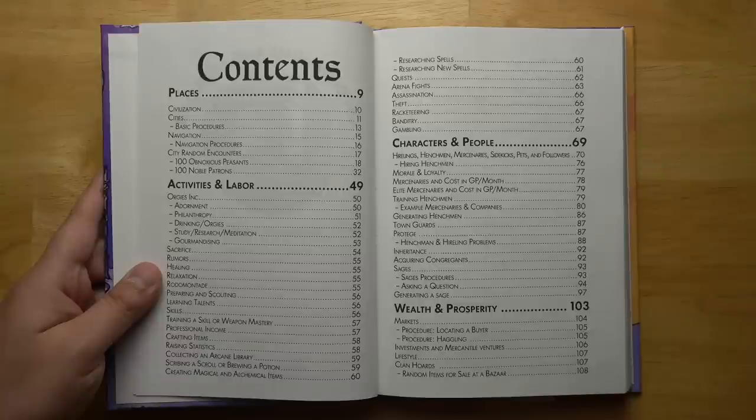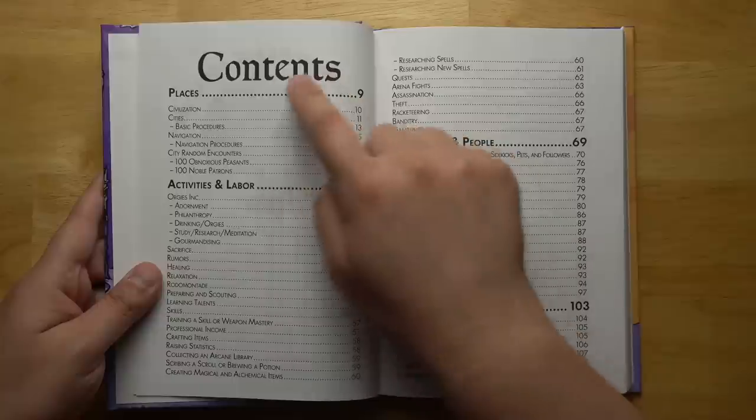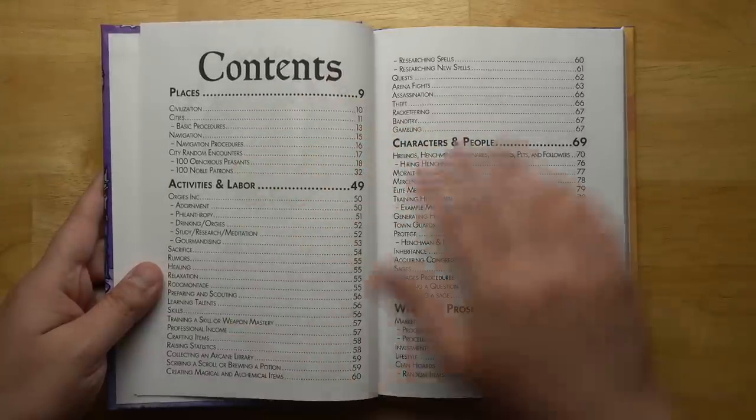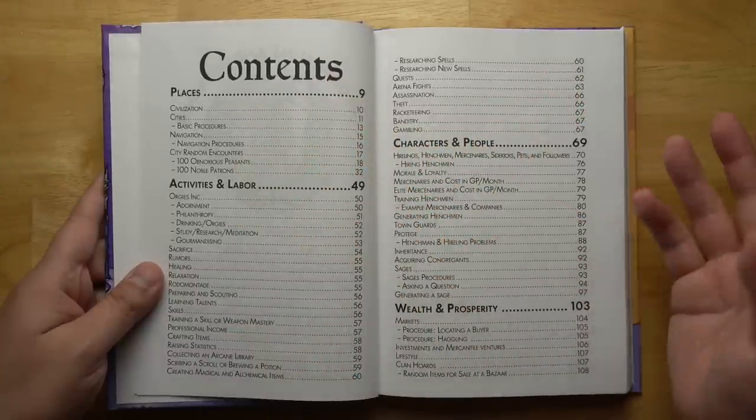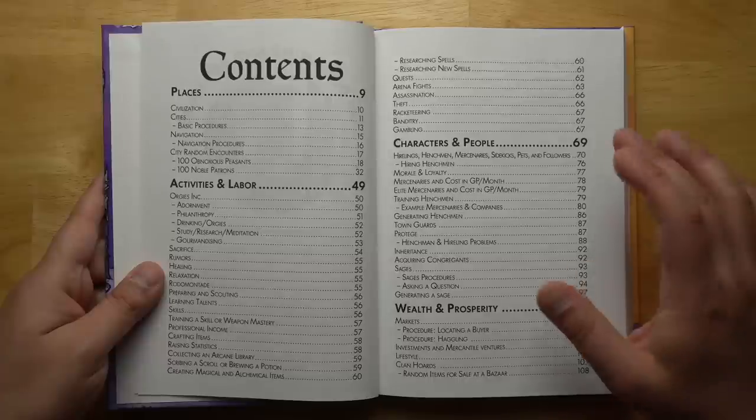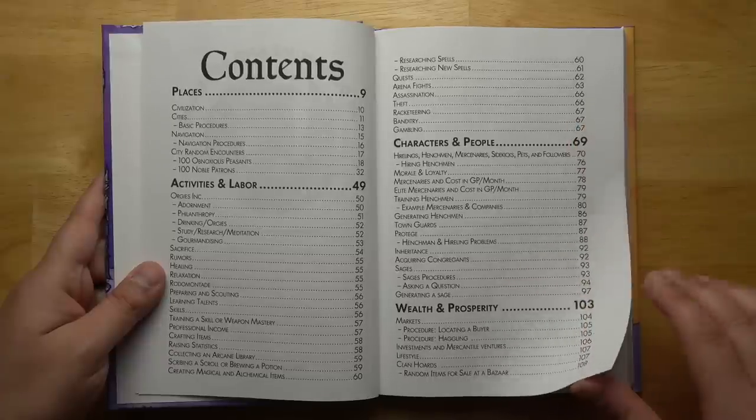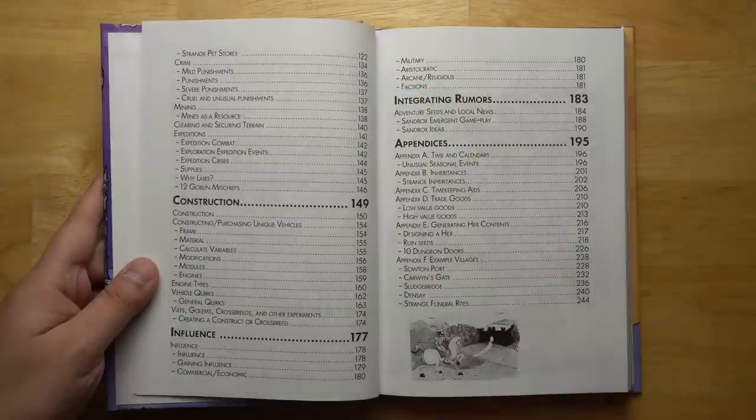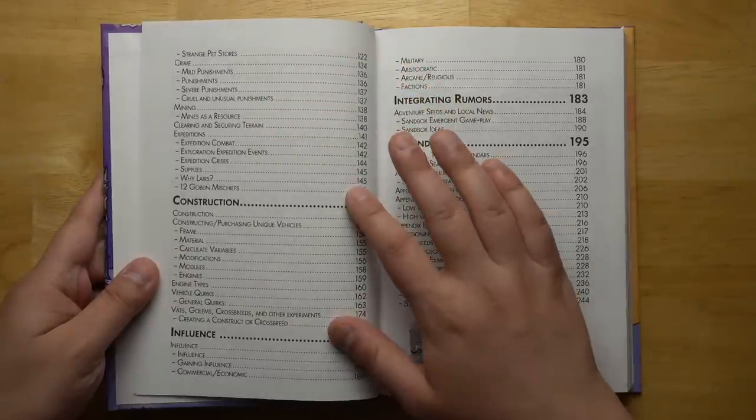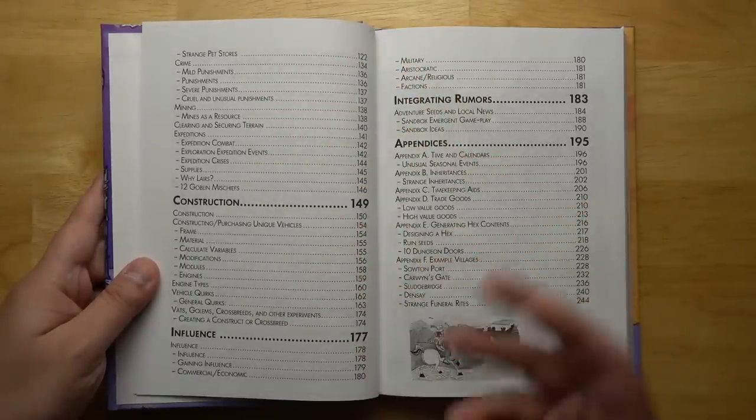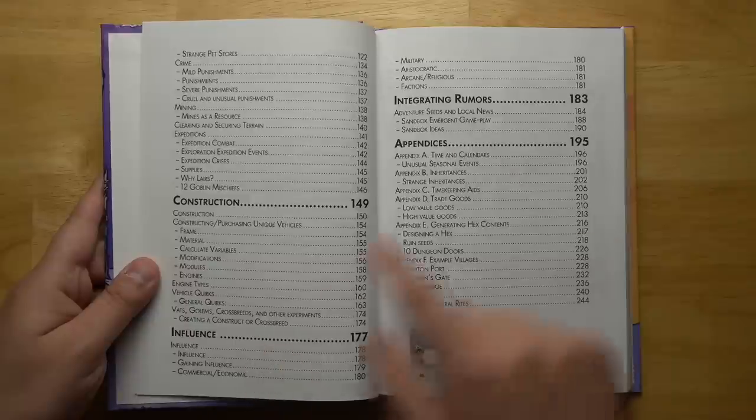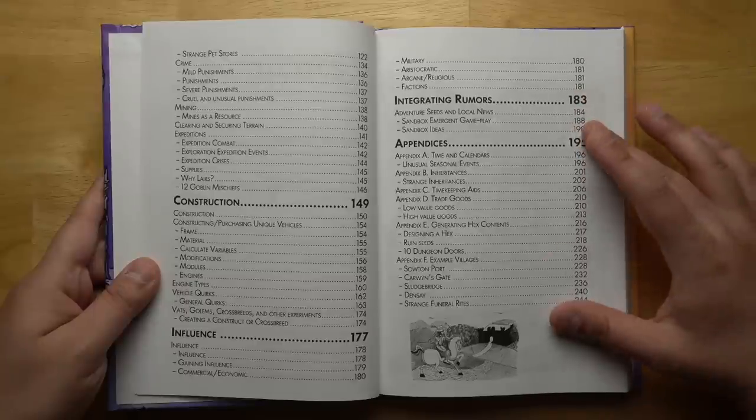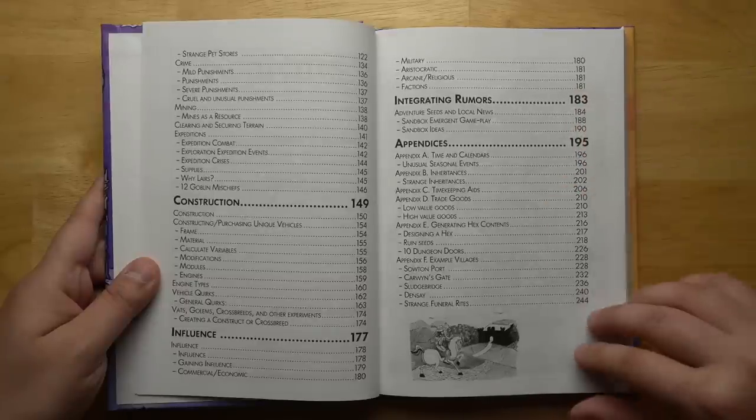Here's our table of contents. Some of the things included are different places, civilization, navigation, city random encounters, different activities and labor for making money while you're in between adventures, characters and people you can encounter, wealth and prosperity like markets and hordes, crime, mining and expeditions, constructing castles or fortifications, engines, vehicles, gaining influence within cities, integrating rumors into your adventures and a bunch of appendices.